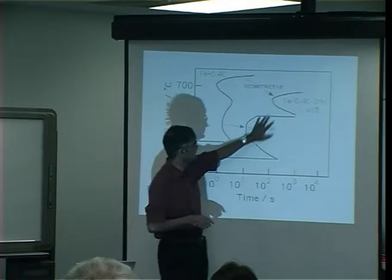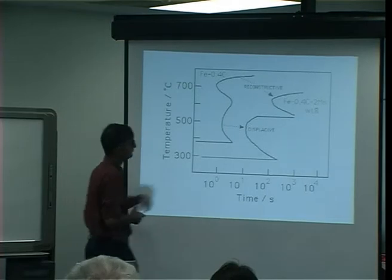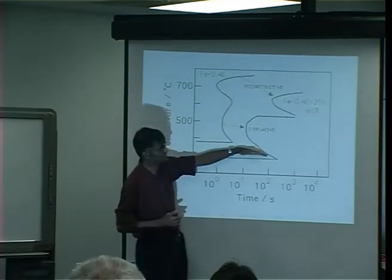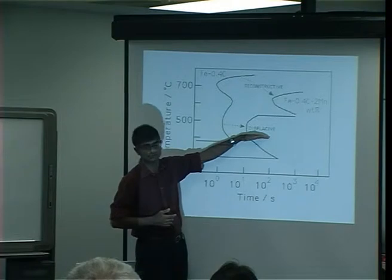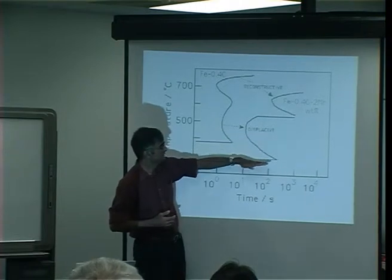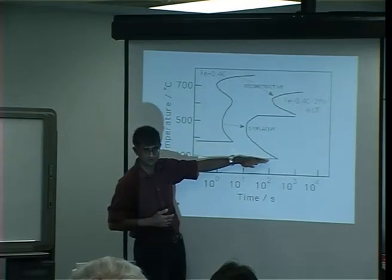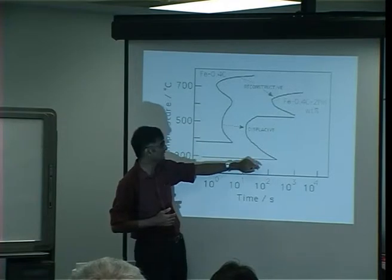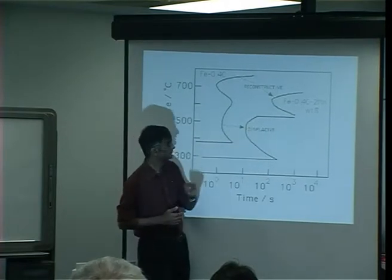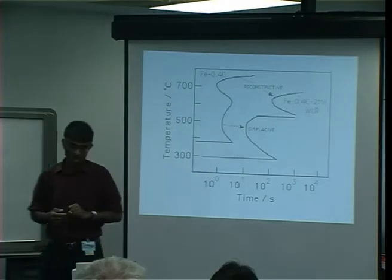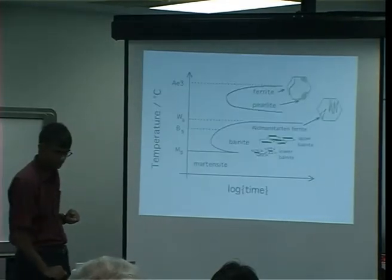In principle, the diagram consists of two separate regimes. It is in this regime that we get the bainite transformation — the driving force isn't sufficient to support martensitic transformation, but nevertheless there isn't enough atomic mobility to support a reconstructive transformation.